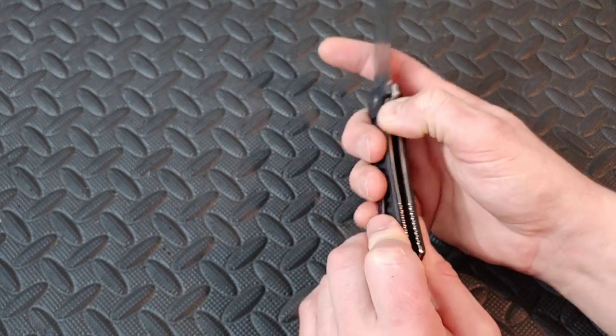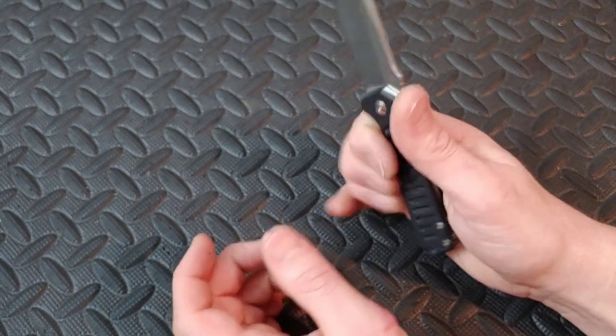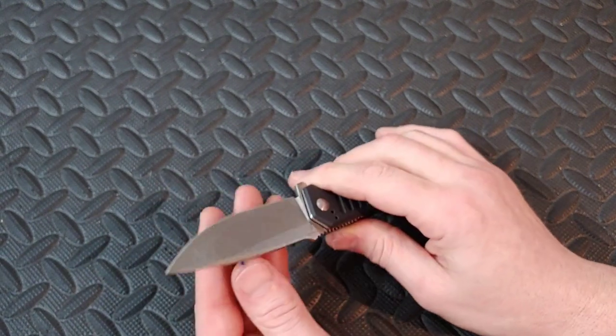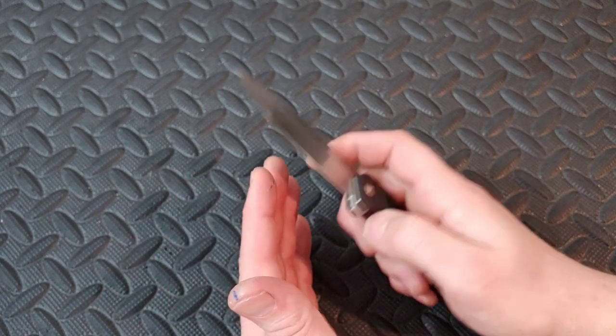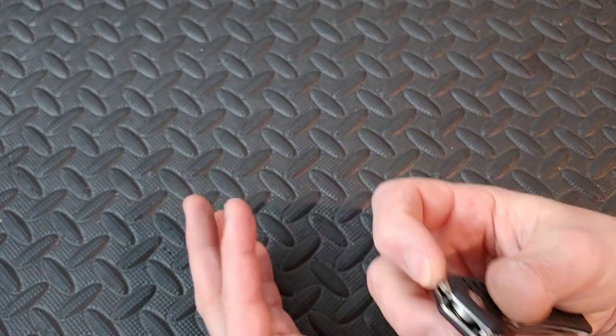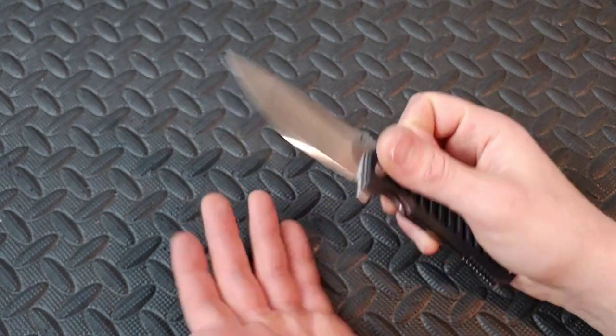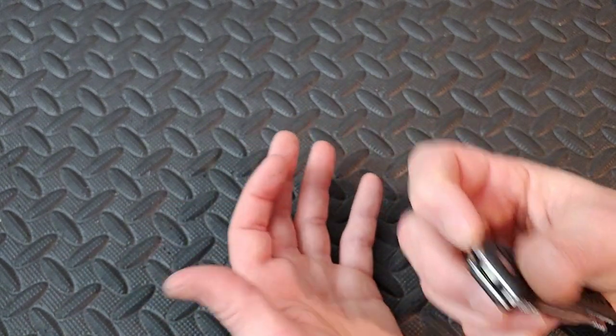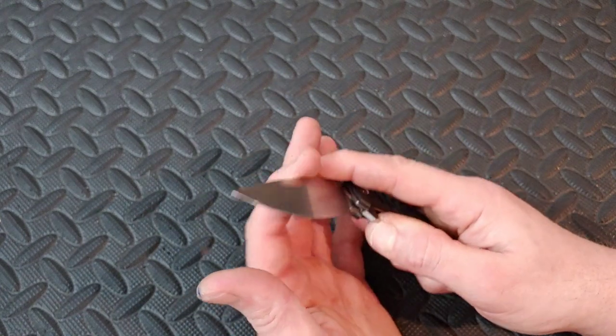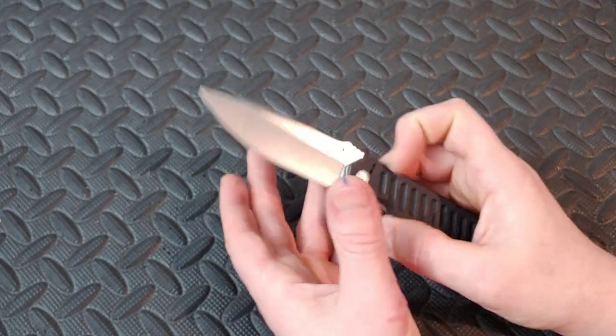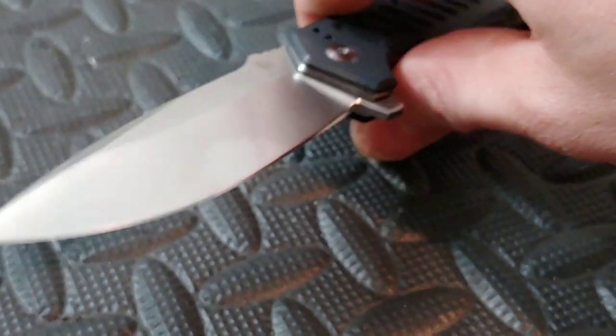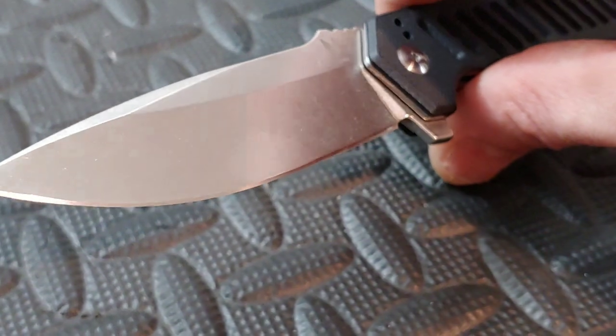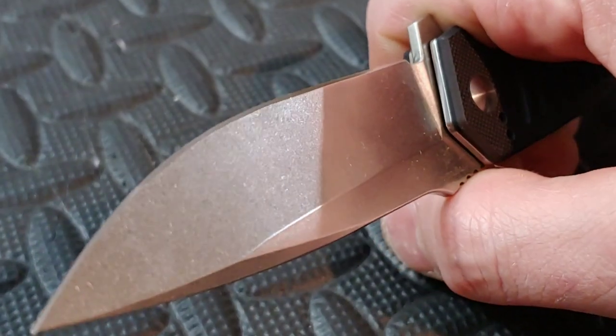But other than that, man, $20. I cannot complain. This steel sharpens up so fast, so easy, and takes a nasty edge. Now it's not going to have M390 edge retention. I mean, unless if it has like a super heat treat and you're talking about a crappy heat treat on M390. It's not going to be as good as 14C28N or anything like that.